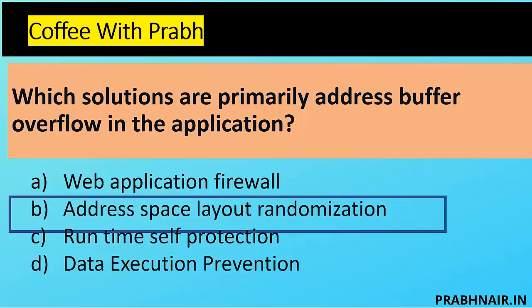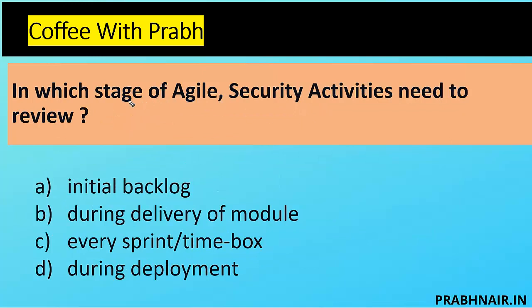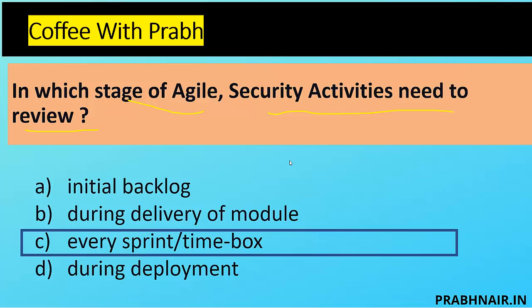Next question: in which stage of Agile should security activities need to be reviewed? Option A, initial backlog only — if we do a review only in the initial backlog, what about the rest of the backlogs during delivery of a module? Option B, during delivery, would be too late and expensive. The answer is C — in every sprint. We need to do a security review in every sprint because introducing security early and reviewing it in every phase saves cost and time.